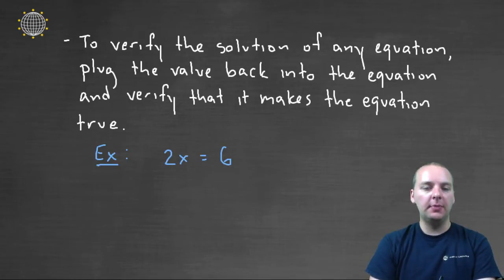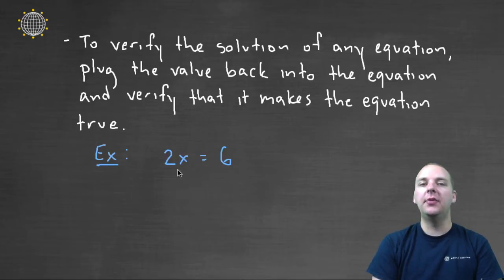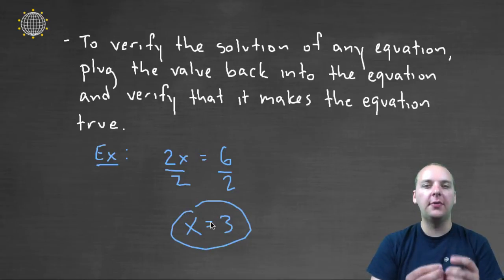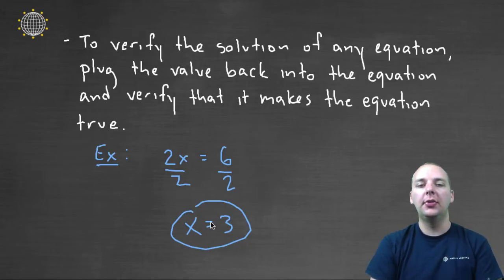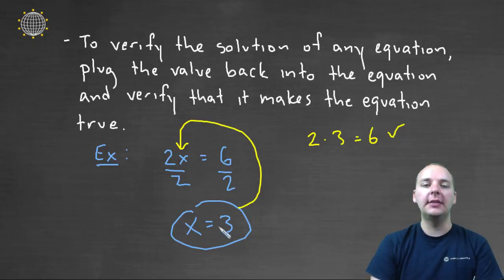Let's look at just a very simple example. If we had 2x equals 6, and we divide both sides by 2, we get x equals 3. Let's say we really wanted to verify that 3 is the right answer. We'll take this 3 and stick it back in for x into the original equation, and 2 times 3 really is 6. That's how we can be confident that 3 is the right answer.